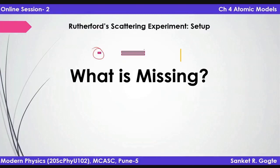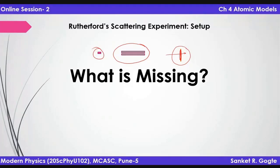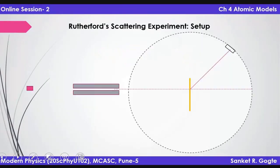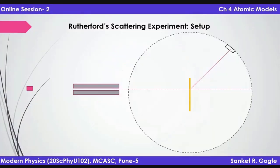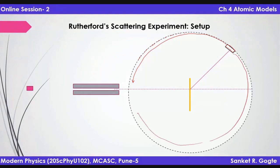What is missing in this setup? We have the alpha particles, the collimator giving a streamlined beam, and the gold foil with gold atoms. In physics experiments, we want to observe what is happening. There is nothing yet which observes the outcome. So he put a screen. The screen can be moved along a dashed circle about the gold foil, and you can choose any angle theta to place the screen.